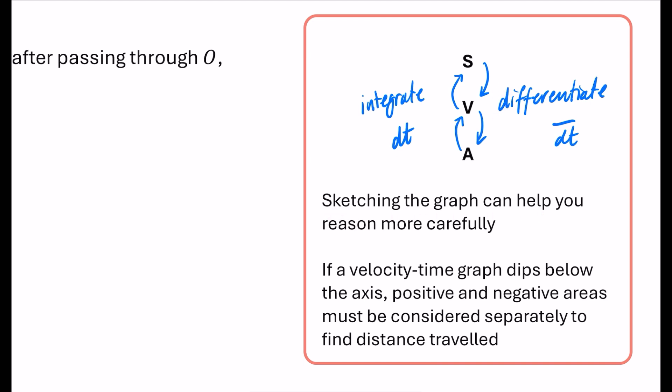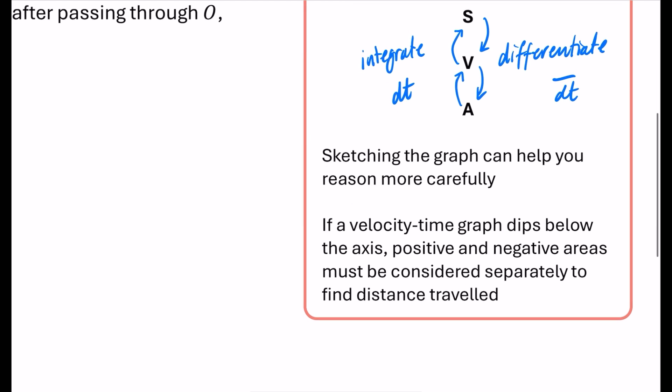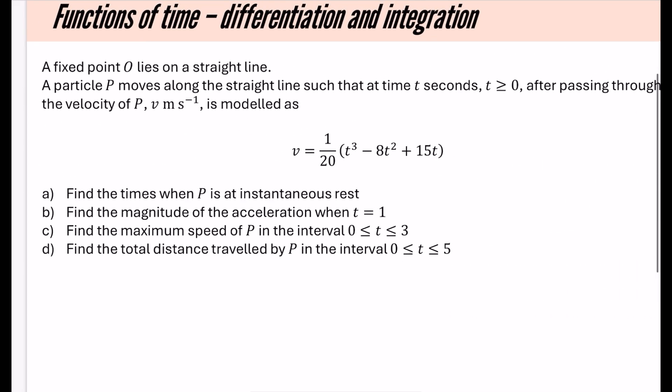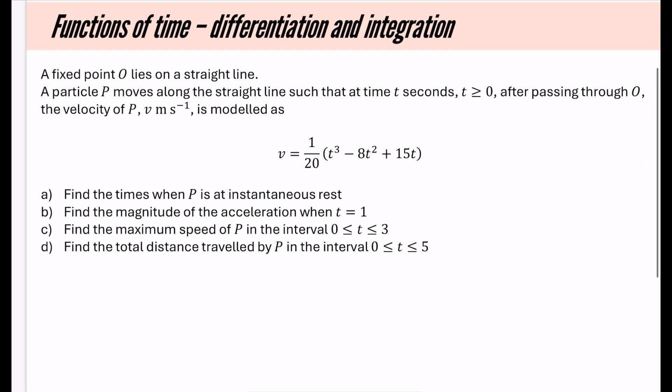Sketching the graph can help you reason more carefully within a question. If a velocity-time graph dips below the x-axis, the positive and negative areas must be considered separately to find the distance travelled. We want to avoid negative areas when we're doing these kinds of questions.